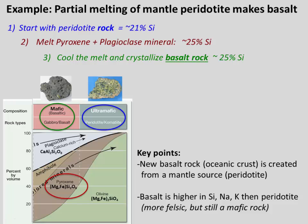So to hit home the key point: we created a new rock, basalt, by partially melting the source rock peridotite. And that is how new oceanic crust is born with a different composition than its parent.